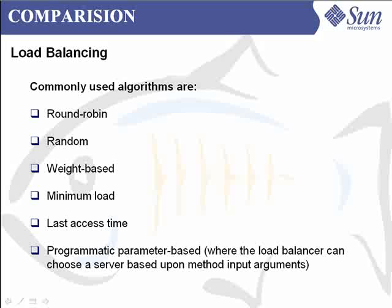The GlassFish application server provides good facilities for load balancing. Still, sometimes we need to have more fine-grained control over how our cluster nodes are loaded with requests. Such conditions can happen in a shared environment when we are using the processing power to host several applications, ranging from database to batch job processing to application servers, serving requests that come from different customers. Such conditions can lead us to change the load routed towards each GlassFish instance during different time slices, either manually or automatically based on defined rules.